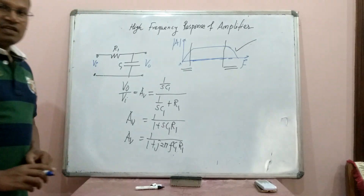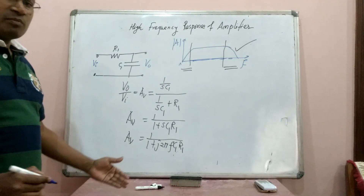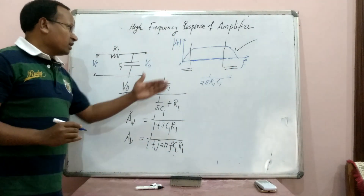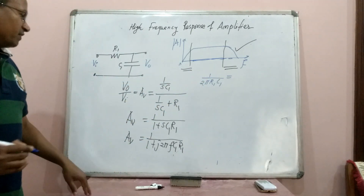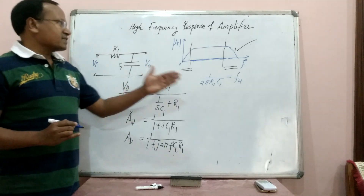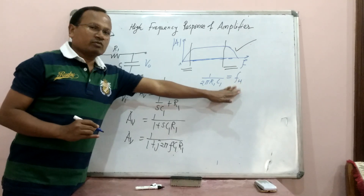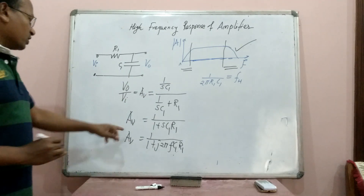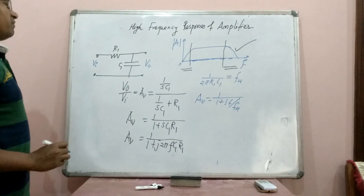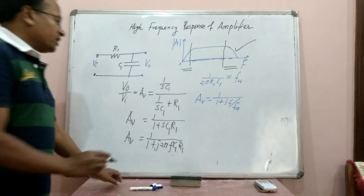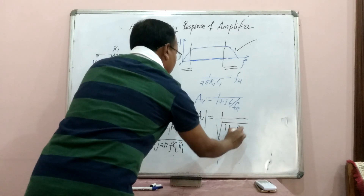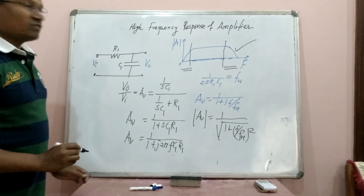When discussing the magnitude of gain, we replace 1/(2πR1C1) with a constant FH, which is the cutoff frequency. The H indicates this is the high frequency response cutoff. So FH = 1/(2πR1C1). Substituting this value, we write AV as 1 divided by (1 + j·F/FH). The magnitude is then 1 divided by the square root of (1 + (F/FH)²).